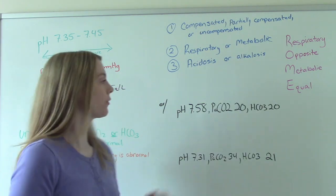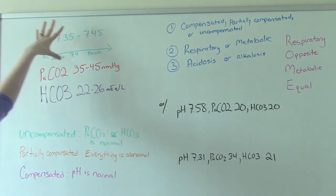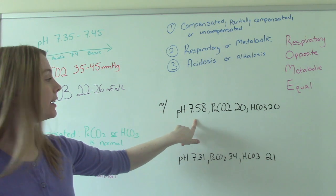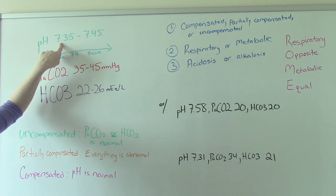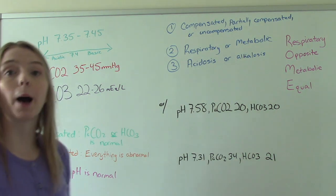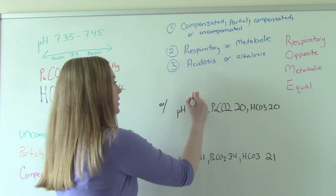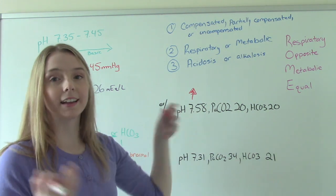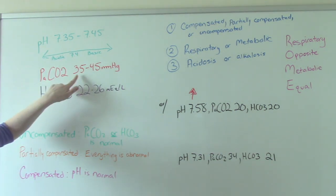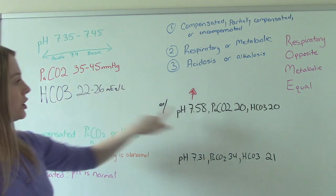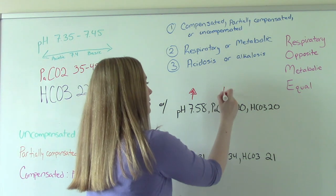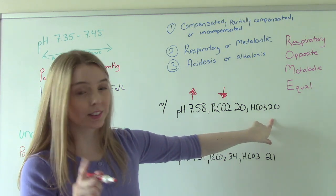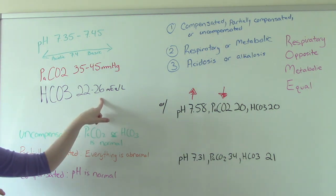Let's do some sample problems. Look at your numbers and determine if they're within normal ranges, and if not, whether they're above or below. Starting with our pH: it's 7.58. The normal range is 7.35 to 7.45, so this is above normal — we'll give it an up arrow. Our CO2 is 20, which is below our normal range of 35 to 45. And our bicarb is also 20, which is also not in the normal range of 22 to 26 — so it's low too.